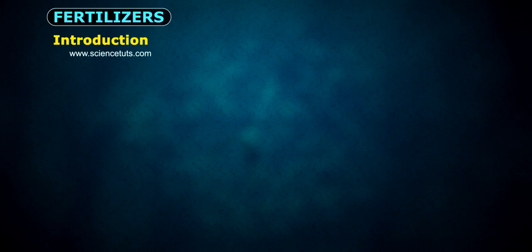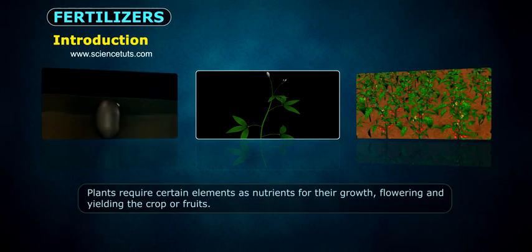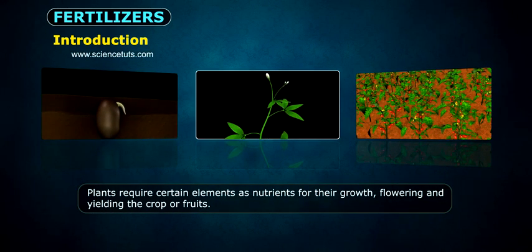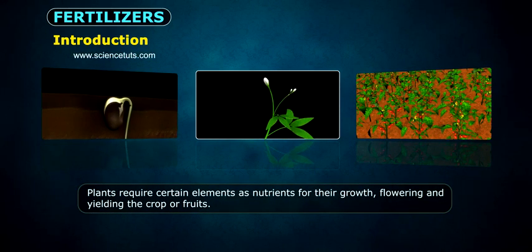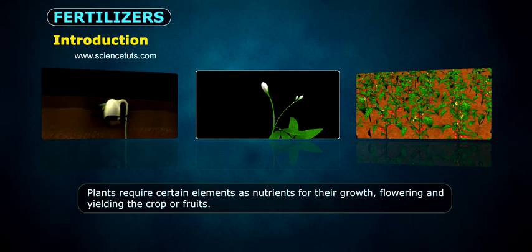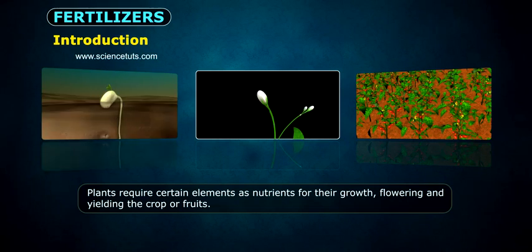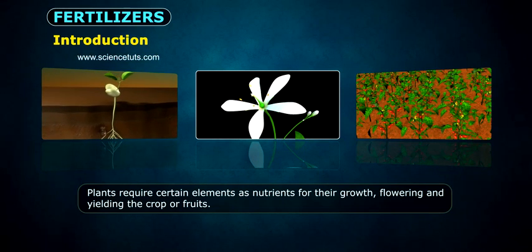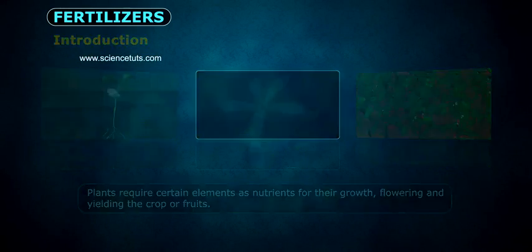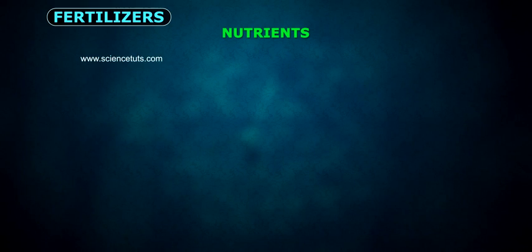Introduction: Plants require certain elements as nutrients for their growth, flowering, and yielding the crop of fruits. The nutrients are classified into four types.